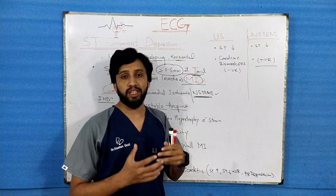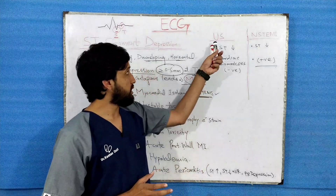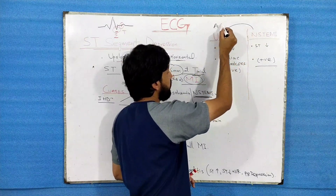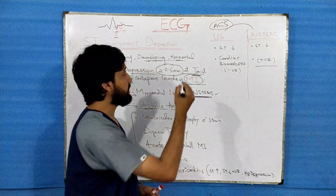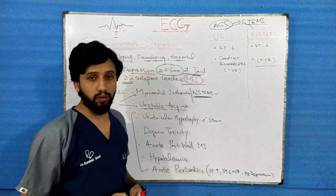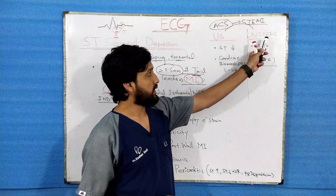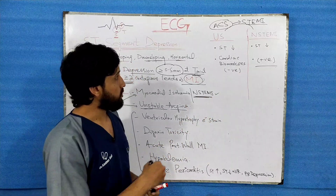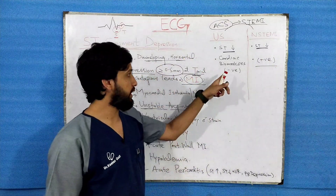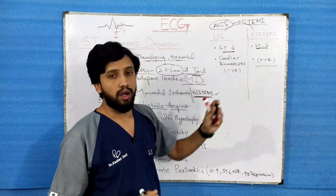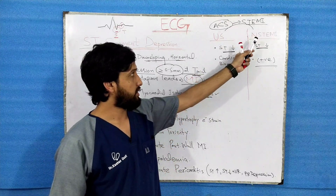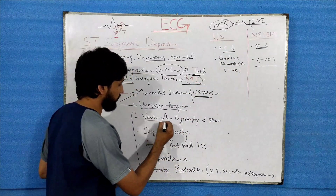When a patient comes with chest pain, how do you differentiate between unstable angina and NSTEMI? Both are forms of acute coronary syndrome — the third form being STEMI. In both conditions you will see ST segment depression, but in unstable angina cardiac biomarkers will be negative, while in NSTEMI cardiac biomarkers will be positive.